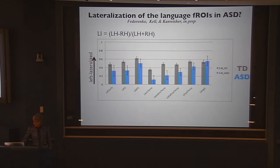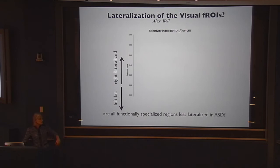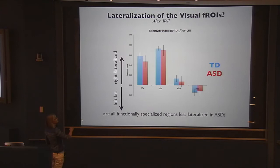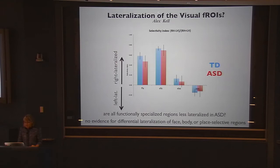Does this happen all over the brain in autism? No. The fusiform face area shows no significant difference in lateralization, and a bunch of other visual regions also show no difference. So it seems to be something specific about those language regions.